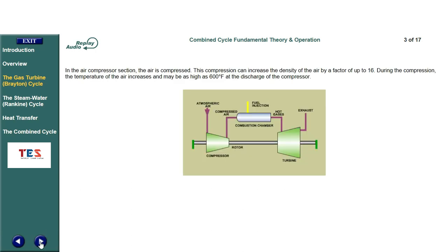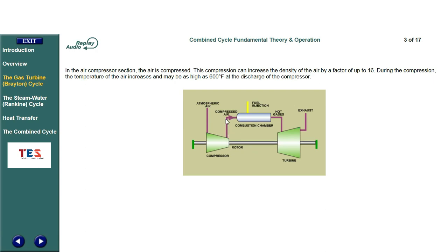In the air compressor section, the air is compressed. This compression can increase the density of the air by a factor of up to 16. During the compression, the temperature of the air increases and may be as high as 600 degrees Fahrenheit at the discharge of the compressor.